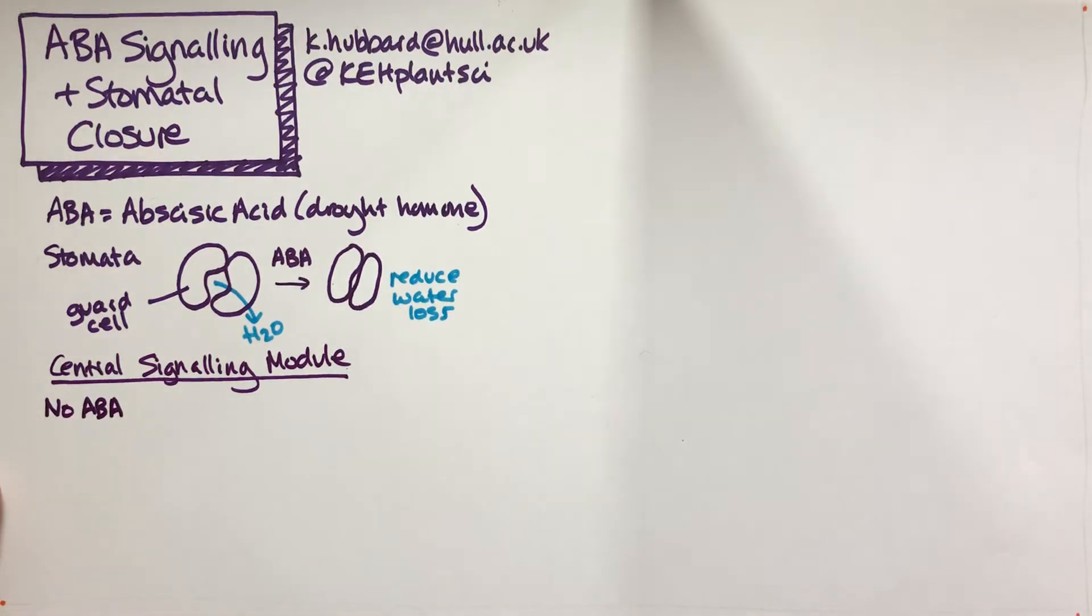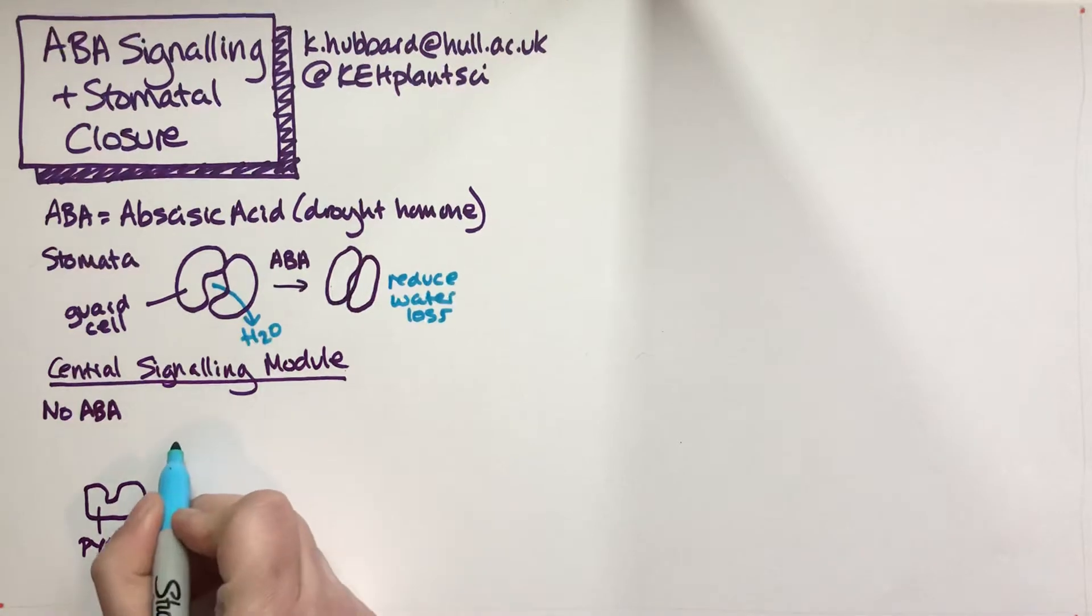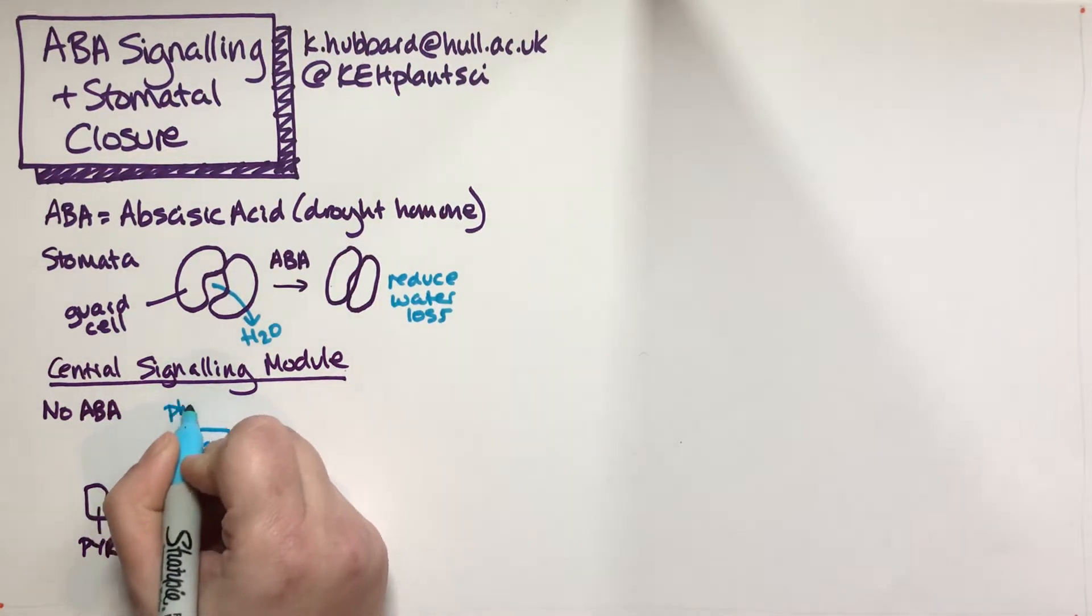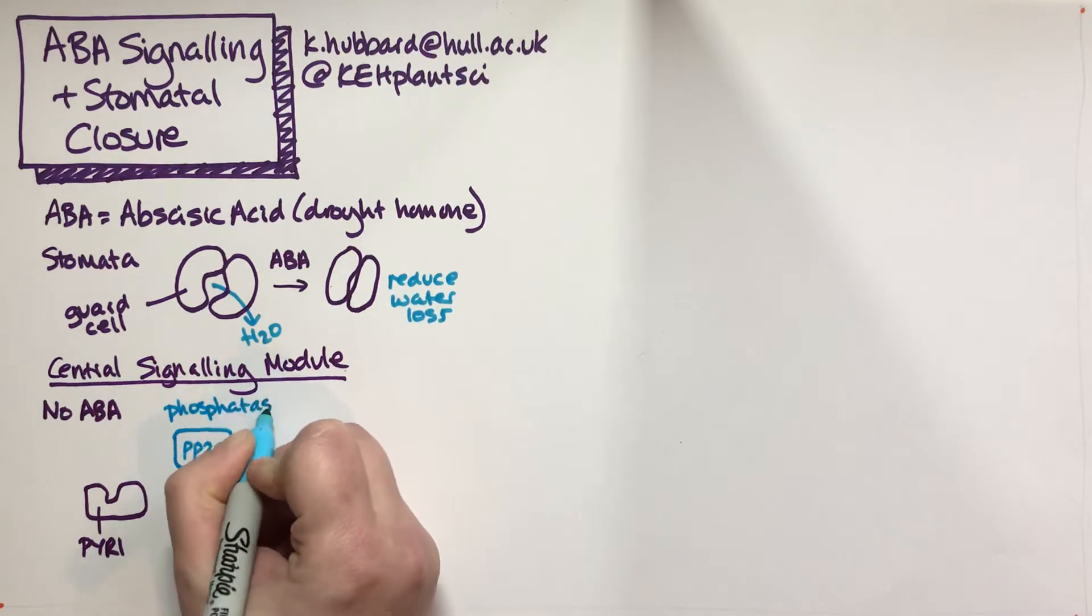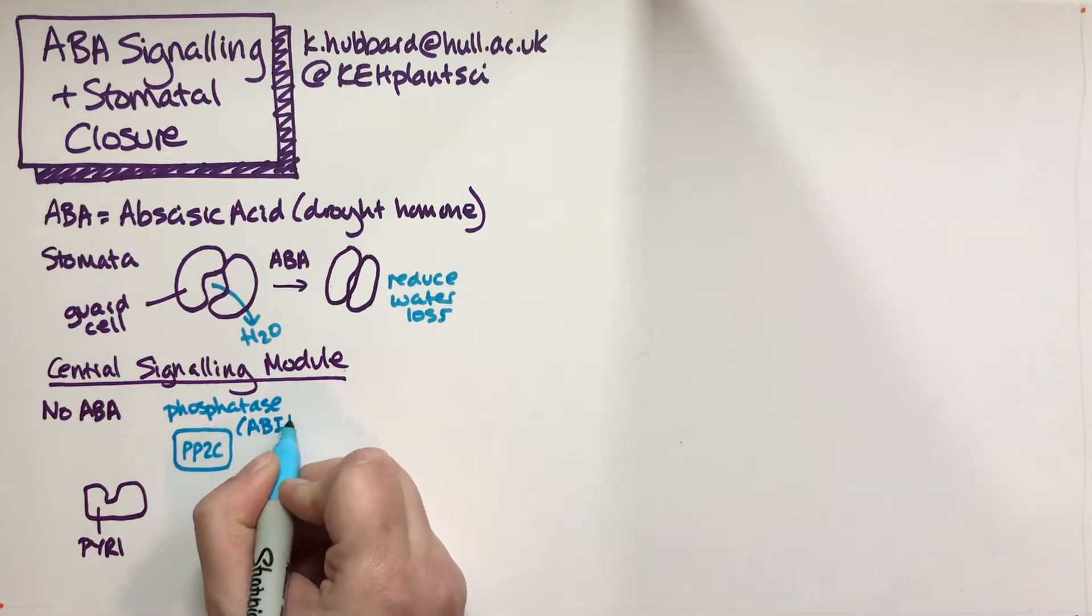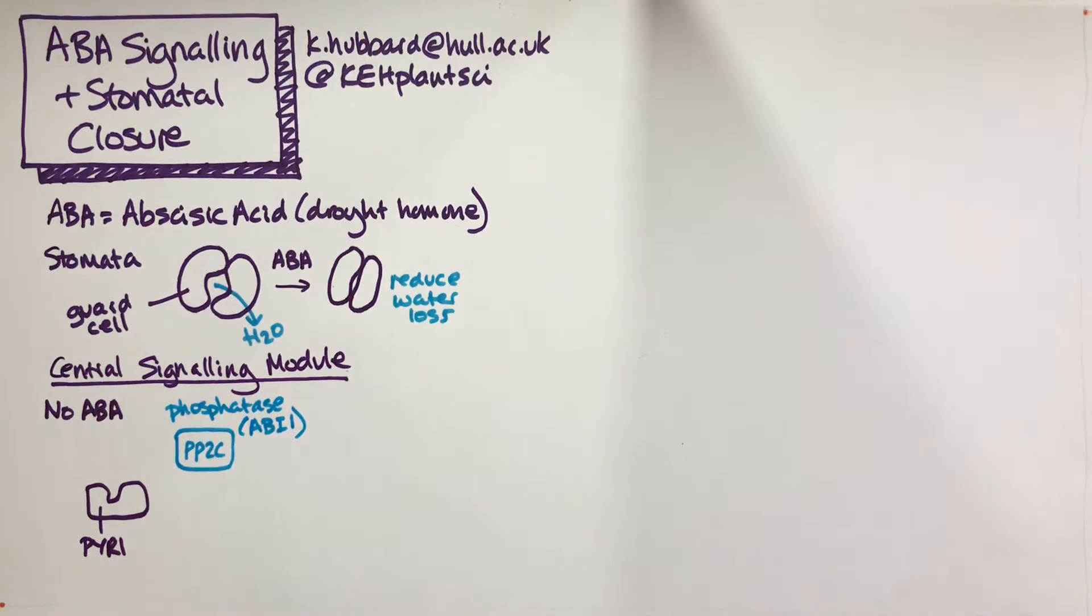Let's think about it if we've got no ABA, in a nice happy healthy plant. The ABA receptor is a small cytosolic protein called PYL1, which in the absence of ABA is just sitting there in the cytosol. There are two other proteins involved: one is PP2C, a phosphatase that removes phosphate groups from things, sometimes named ABI1.